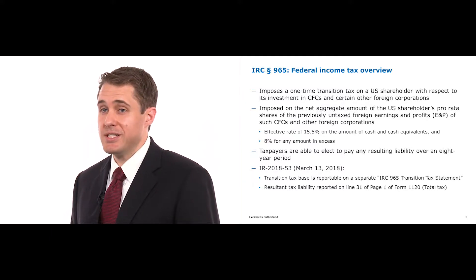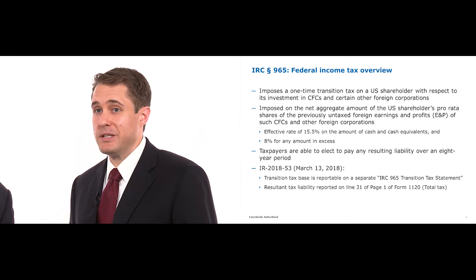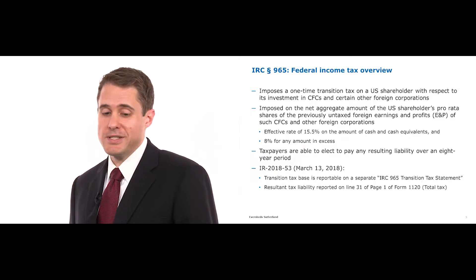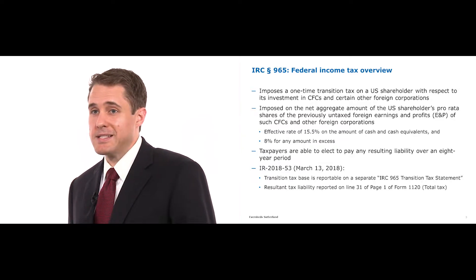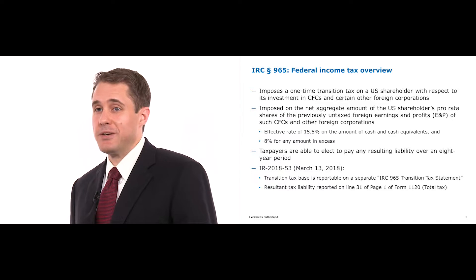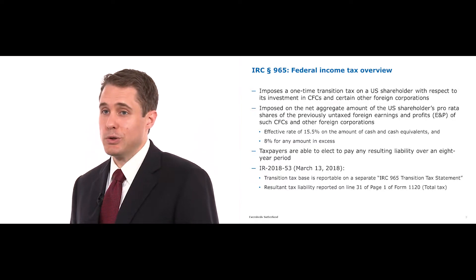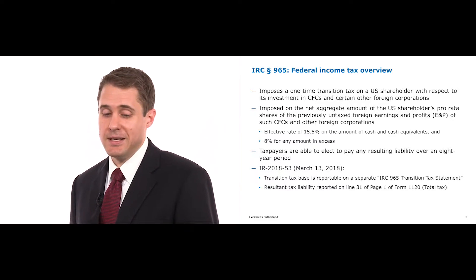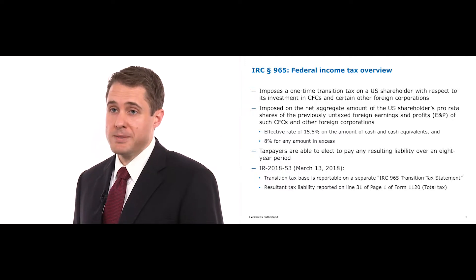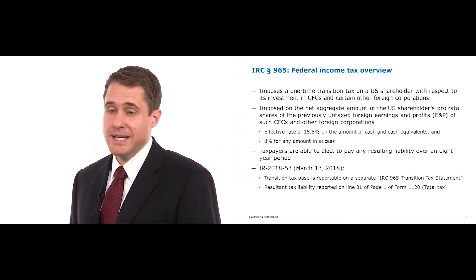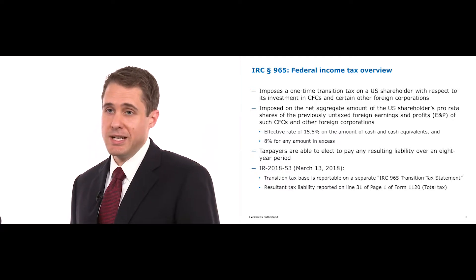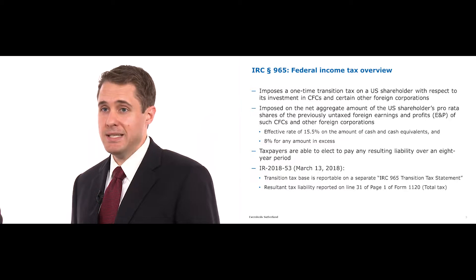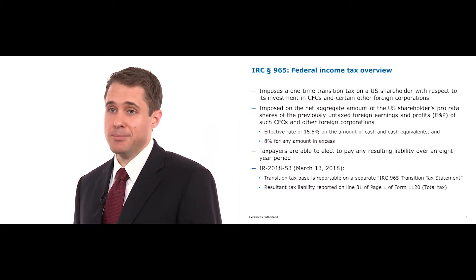Proposed regulations under Section 965 were introduced on August 1 that provide, among other things, that members of a consolidated group are treated as a single U.S. shareholder for purposes of certain calculations under Section 965. From a reporting perspective, the Section 965(a) inclusion and Section 965(c) deduction were not reflected in the Form 1120, but instead are reported on a separate Section 965 statement.